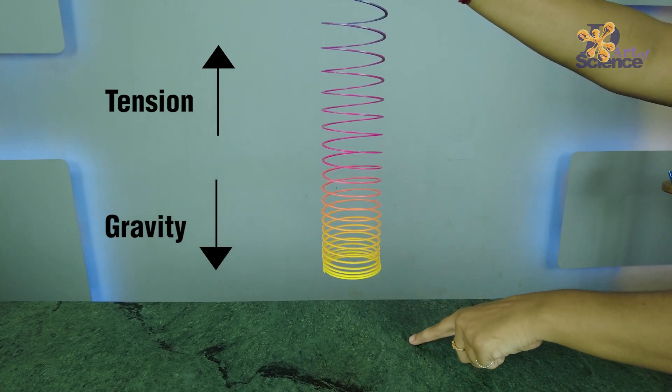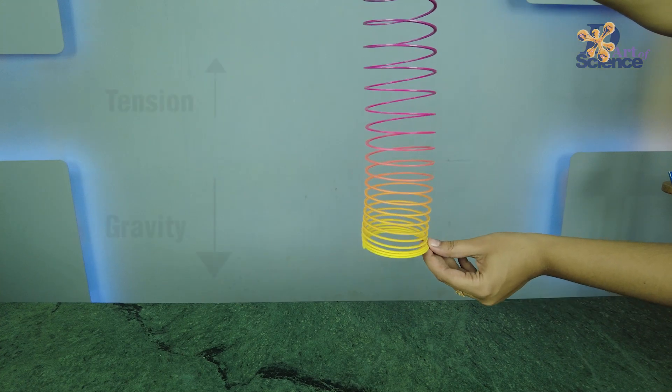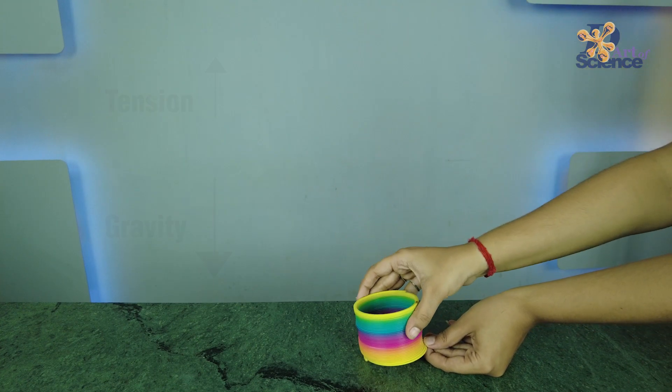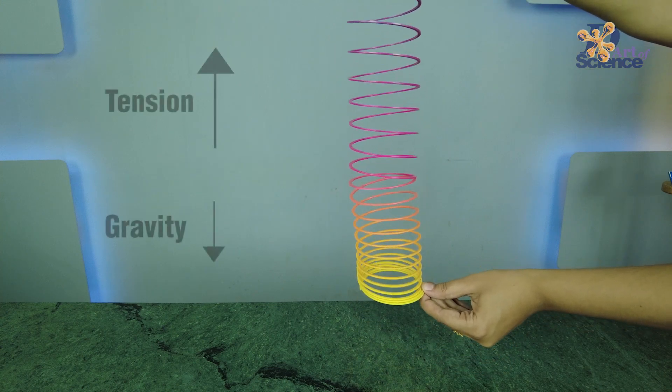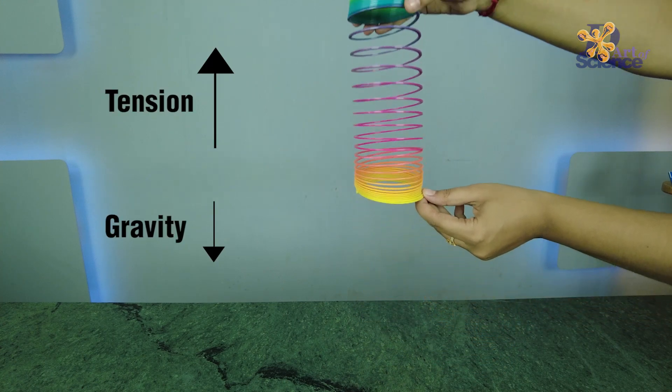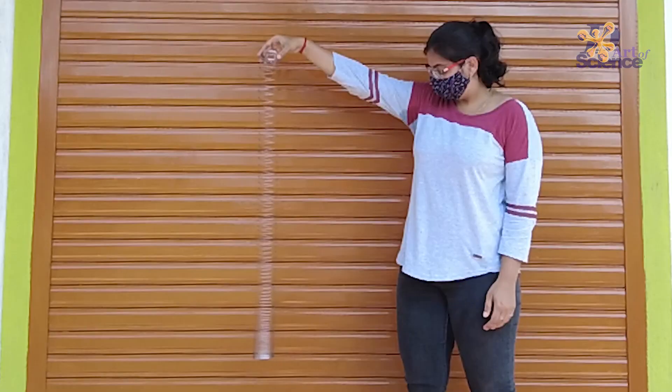But as we can see the bottom of the slinky is almost in the same position. So that means the tension and the gravity exert the same amount of force and therefore they cancel each other out.